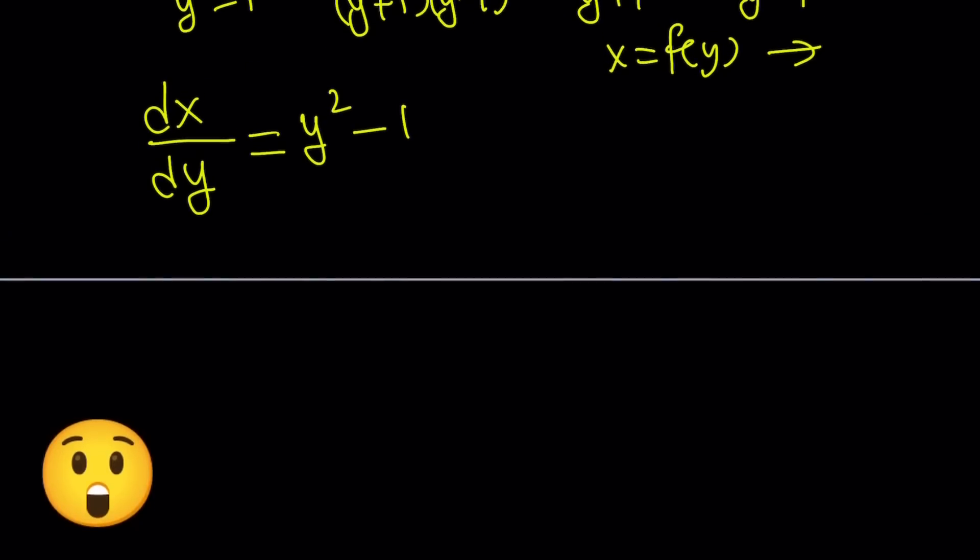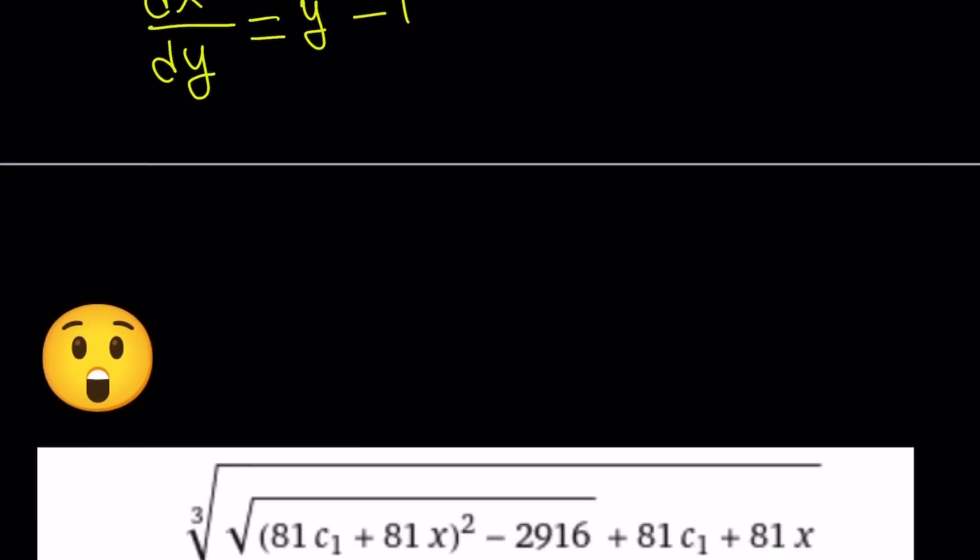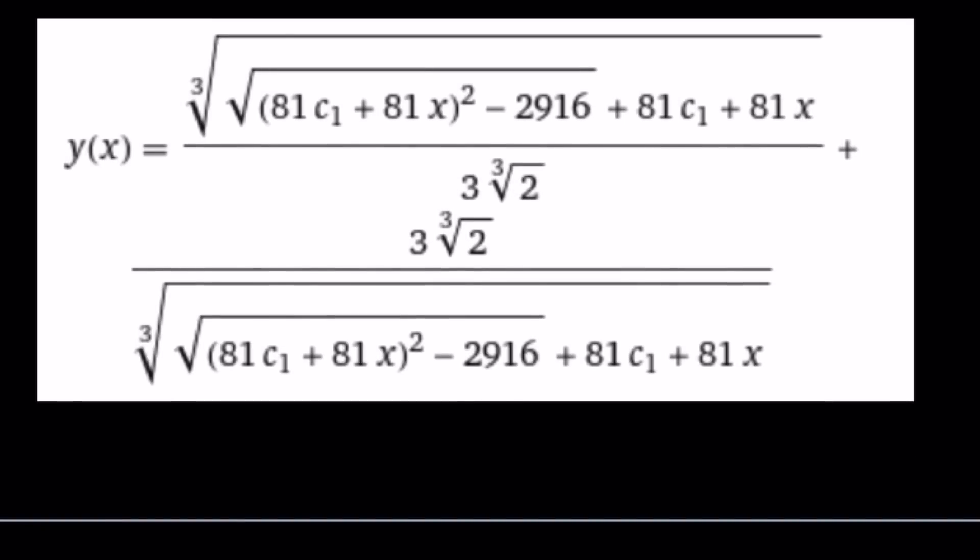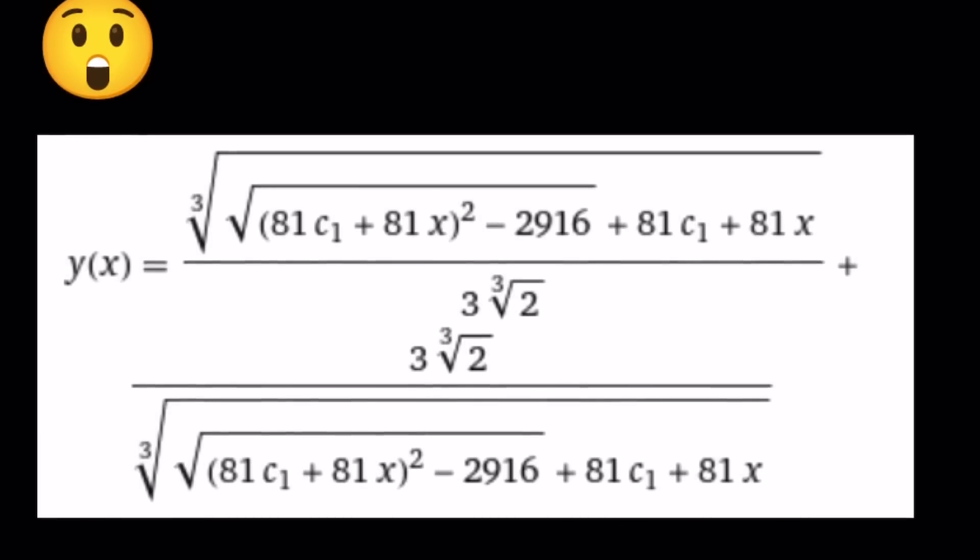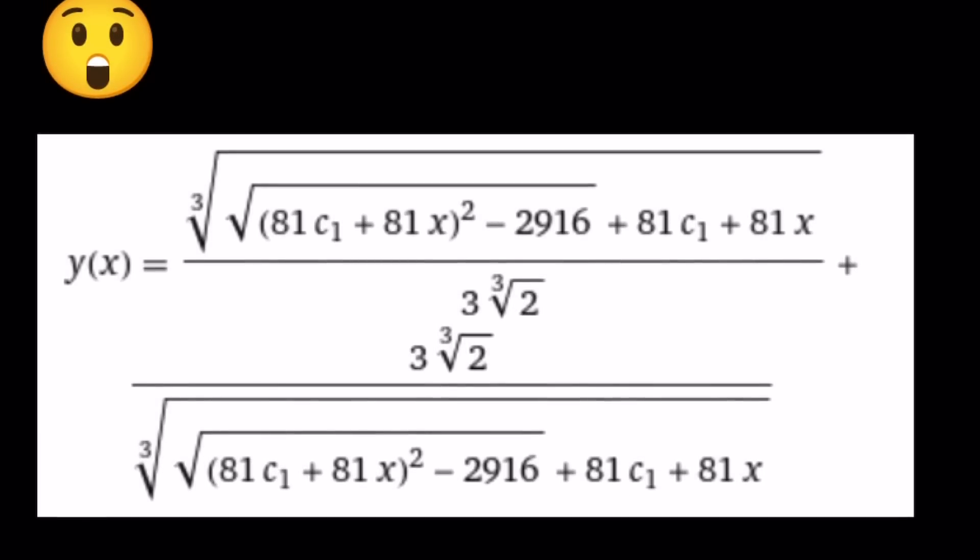So when we look at the solution in Wolfram Alpha, one of the solutions at least, we get the following. And I'm like, what? What is going on here? And obviously the other two solutions are going to be complex. This also tells you that solving for y in terms of x is not an easy thing. But we'll get to that. And don't let this expression scare you because there are more scarier expressions.